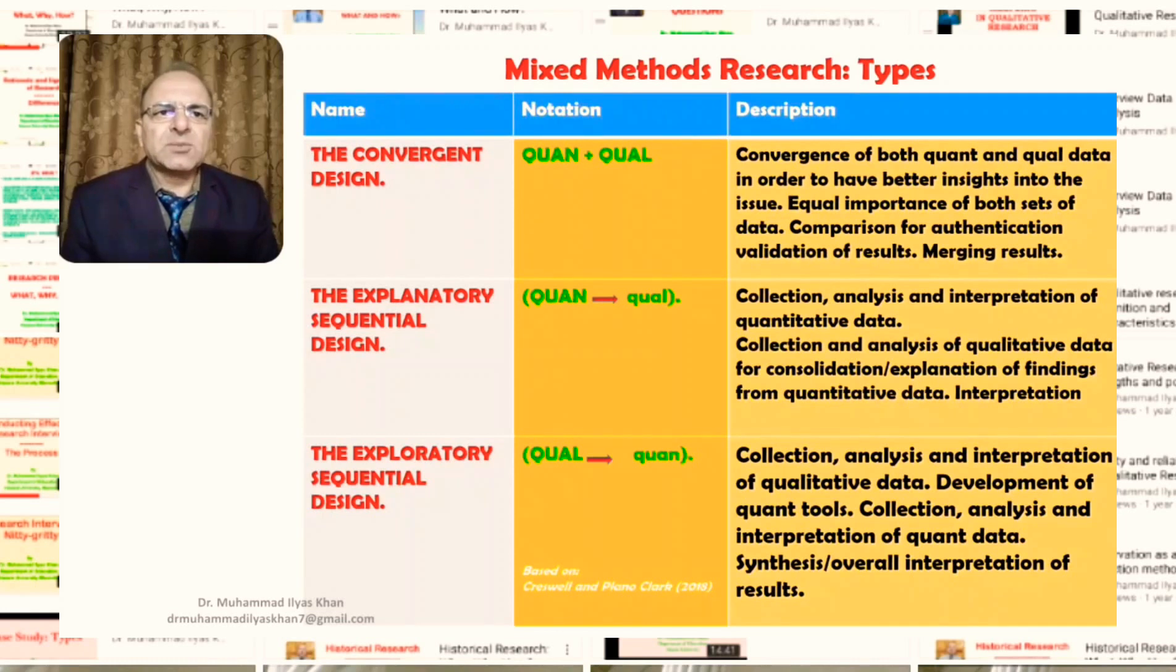Generally, it begins with the collection, analysis, and interpretation of quantitative data. And then, this is followed by the collection and analysis of qualitative data. Generally, the qualitative data is a subsidiary process,